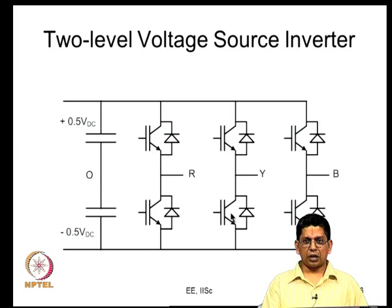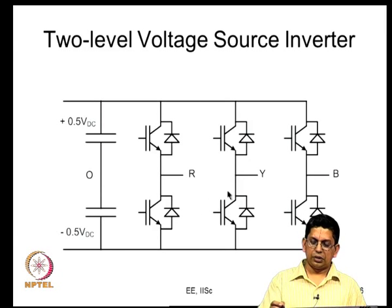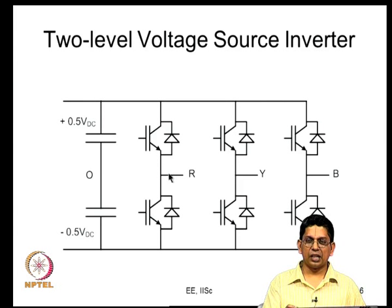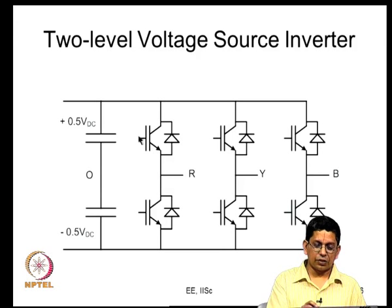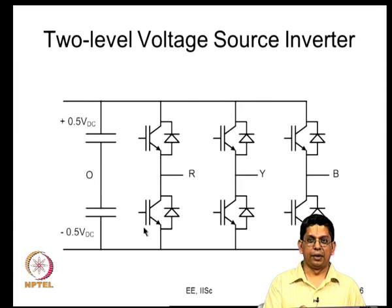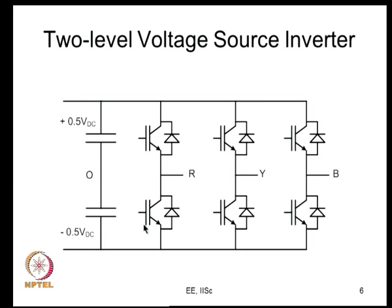Looking at the voltage source inverter: three legs with single pole double throw switches supposed to switch in a complementary fashion. The gating signals for the top and bottom cannot be exactly complementary - the rising edges of both have to be delayed. The outgoing device is switched off first and the incoming device is switched on next, meaning the rising edges of all gating signals are delayed by time td.